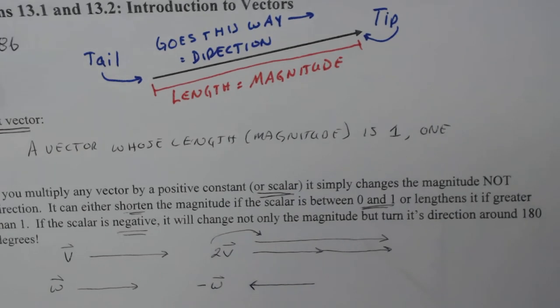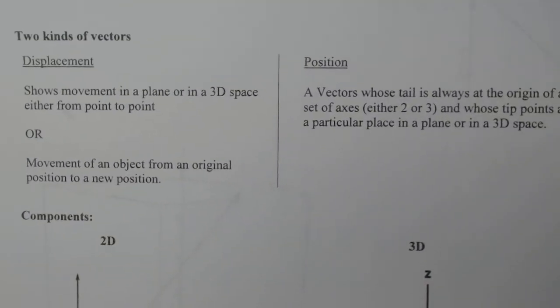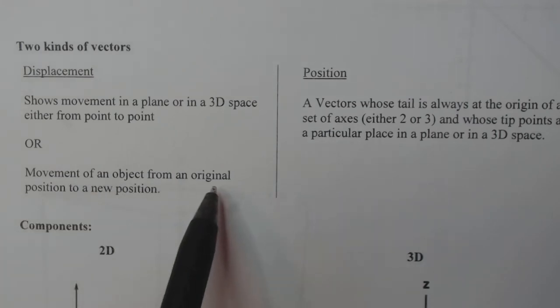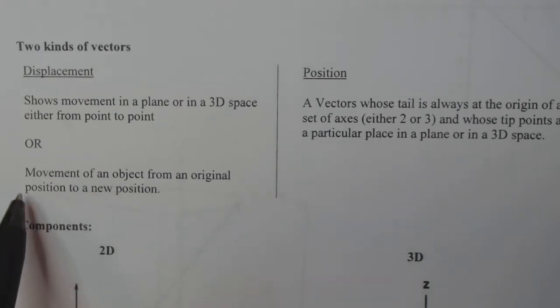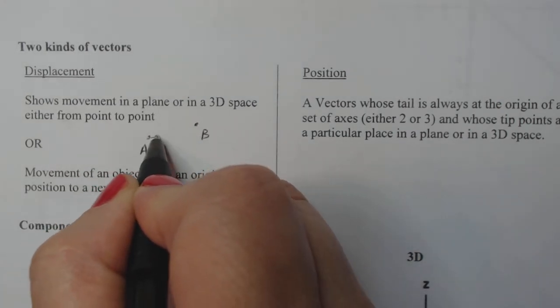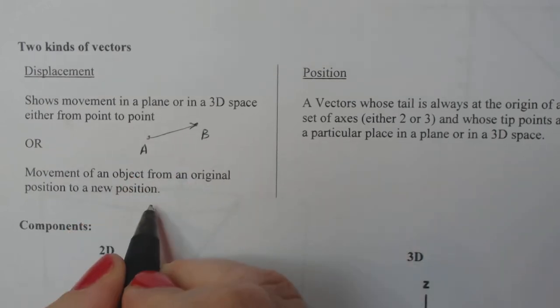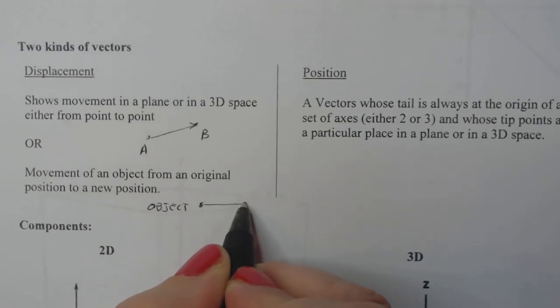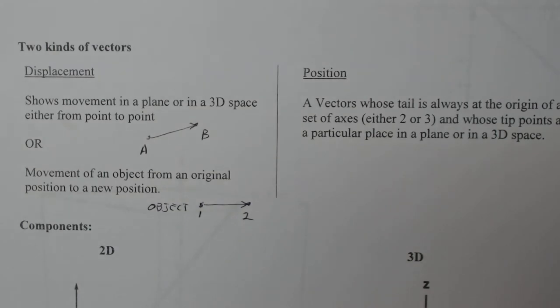Now let's go down and think about the two kinds of vectors that we have and we will work with. So the first kind is called displacement, and it shows movement in a plane or in a 3D space, either from point to point or movement of an object from original position to a new position. So I'm at point A, I want to show going to point B. So that's a displacement vector. If I have object at an original position and I show its movement over to this position, position one and position two, that's the second type of displacement vector.